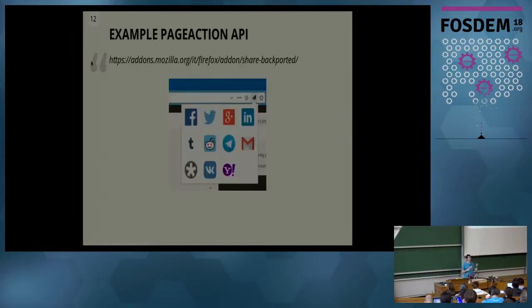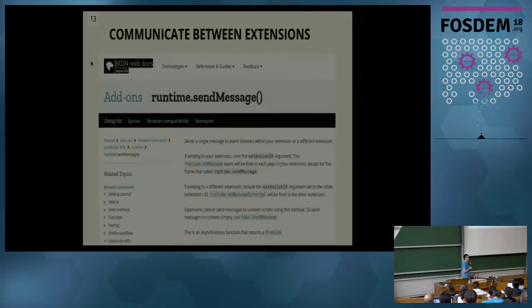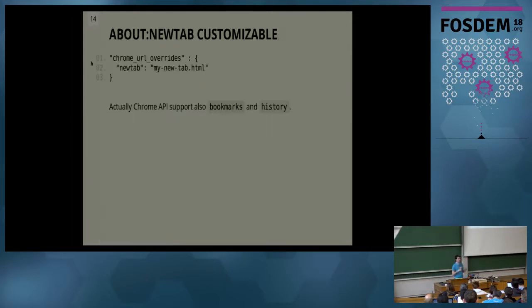I want to show you an example — this is my social extension. Pretty simple: it's an iFrame that does something, and you can use all the JavaScript APIs and libraries you prefer. We also have one of the most asked things on the internet: can an extension communicate with another extension? Yes, you can do it — there is an API that enables that.